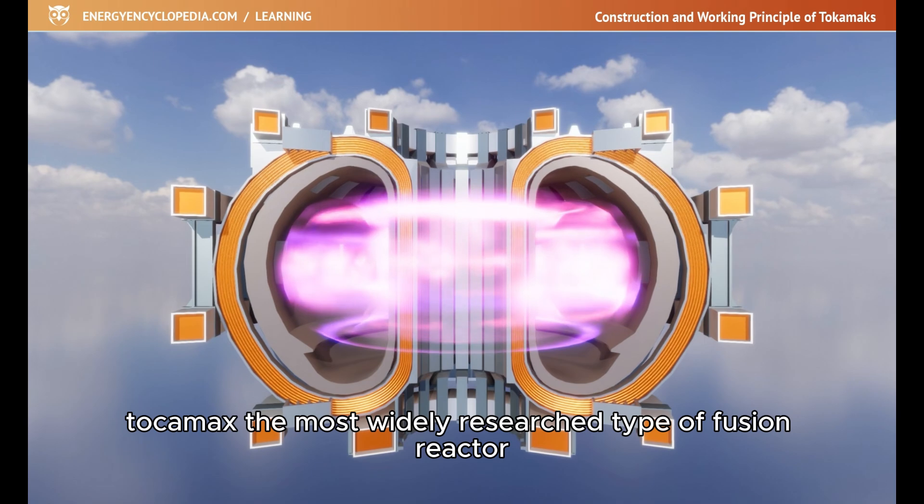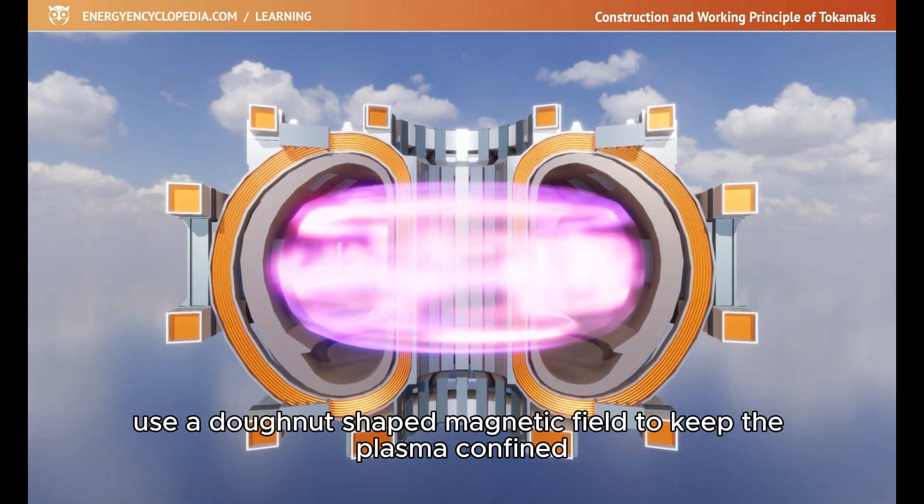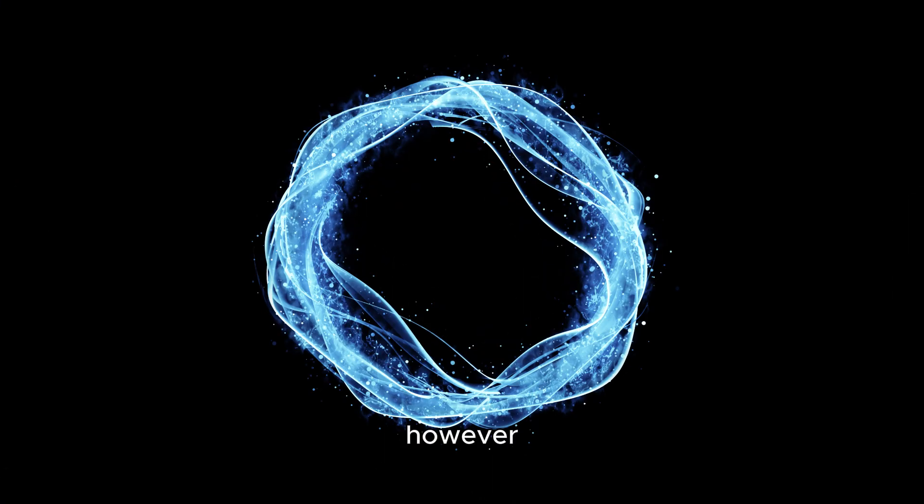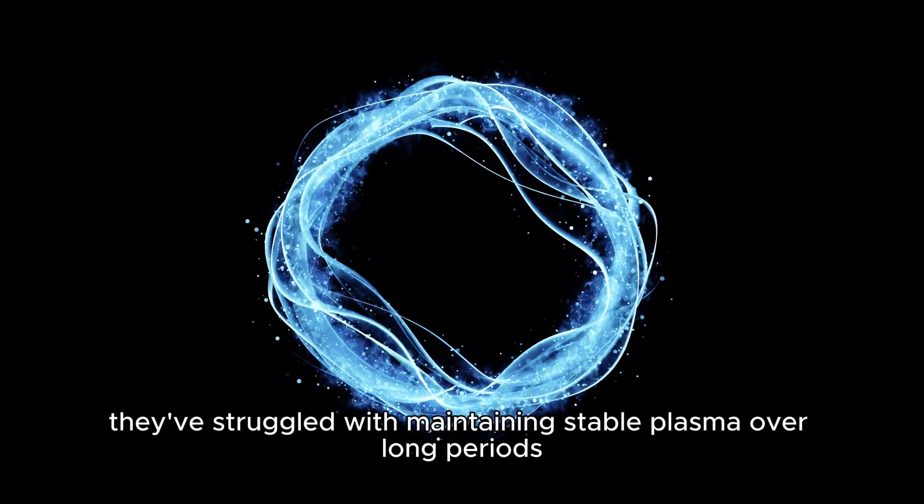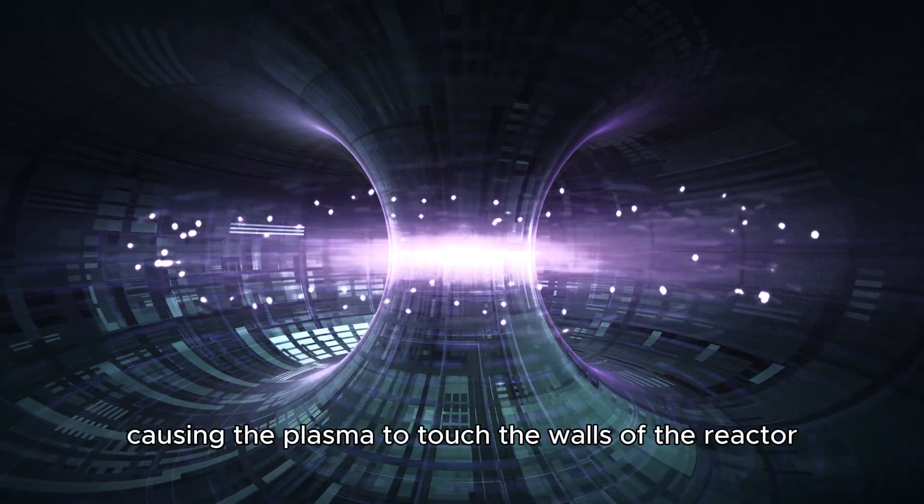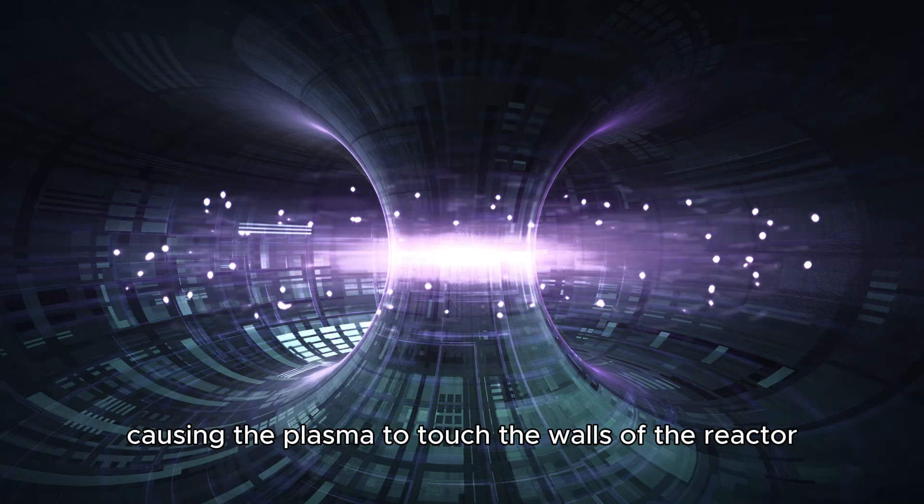Tokamaks, the most widely researched type of fusion reactor, use a donut-shaped magnetic field to keep the plasma confined. However, they've struggled with maintaining stable plasma over long periods. The magnetic fields in tokamaks often fluctuate, causing the plasma to touch the walls of the reactor.